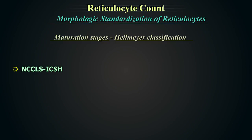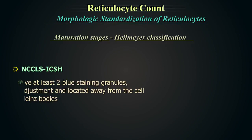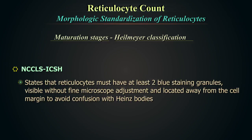The NCCLS/ICSH definition states that reticulocytes must have at least two blue staining granules visible without fine microscope adjustment, and located away from the cell margin to avoid confusion with Heinz bodies.